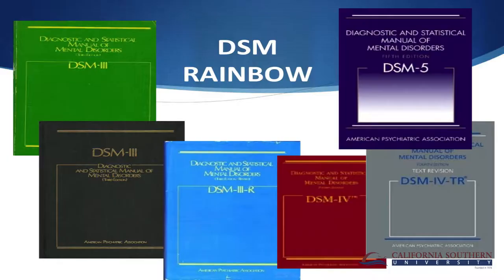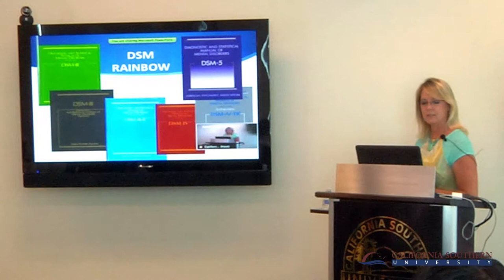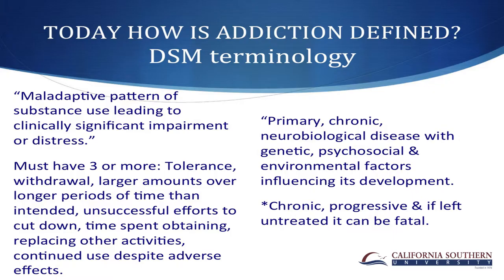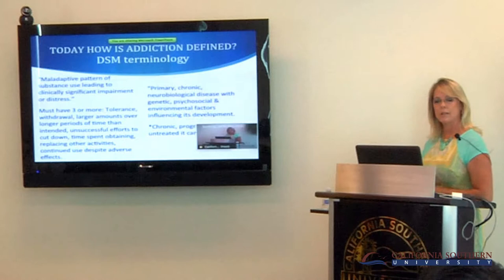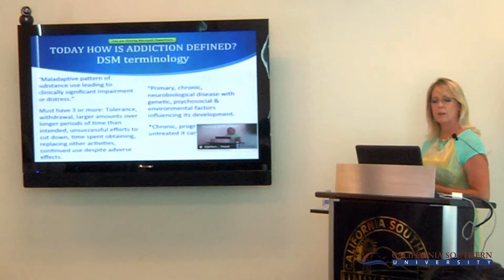Does the DSM look familiar? The Diagnostic Statistical Manual — the Bible of our field — has created a common language through cultural change. How are we defining addiction right now? It is a maladaptive pattern of substance use leading to clinically significant impairment or distress, requiring three or more symptoms: tolerance, withdrawals, large amounts of use over longer periods than intended, unsuccessful efforts to cut down, time spent obtaining the substance, and continued use despite adverse effects.